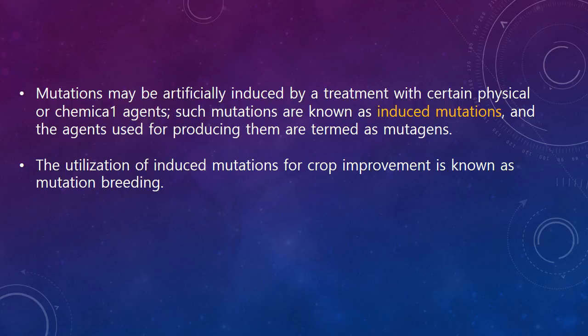Since spontaneous mutations have no significance for plant breeding, induced mutation is very essential. Mutations may be artificially induced by treatment with certain physical or chemical agents — such mutations are known as induced mutations, and the agents used to produce them are called mutagens. The utilization of induced mutations for crop improvement is called mutation breeding.